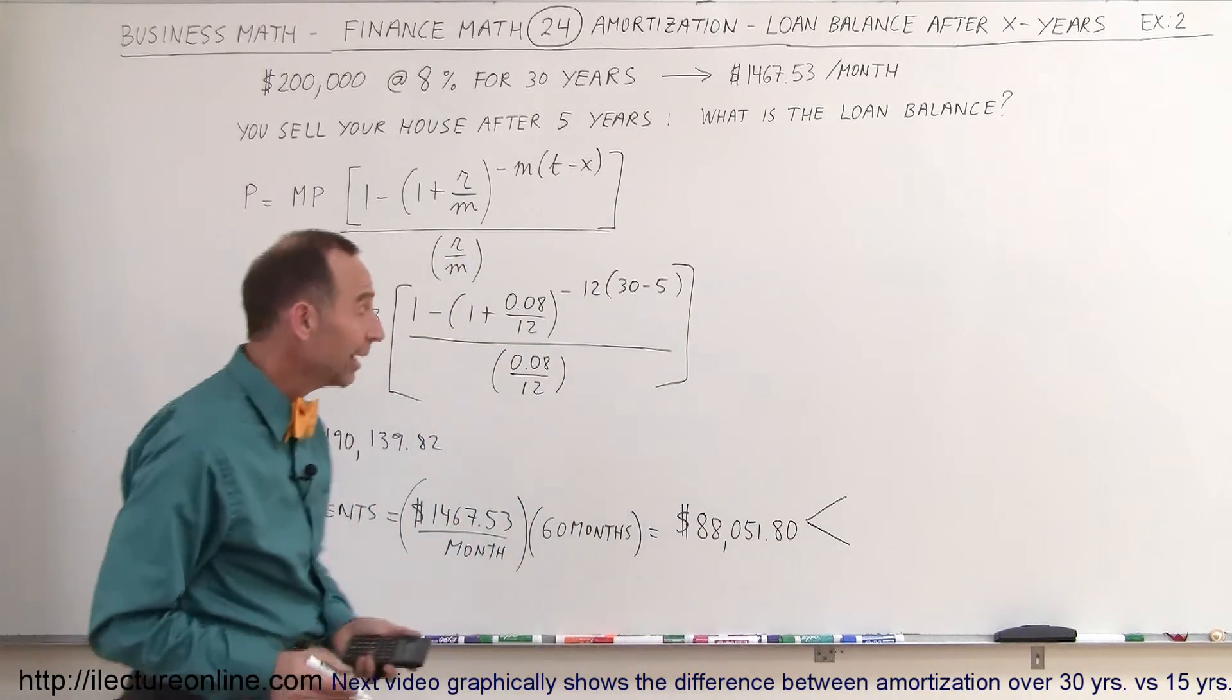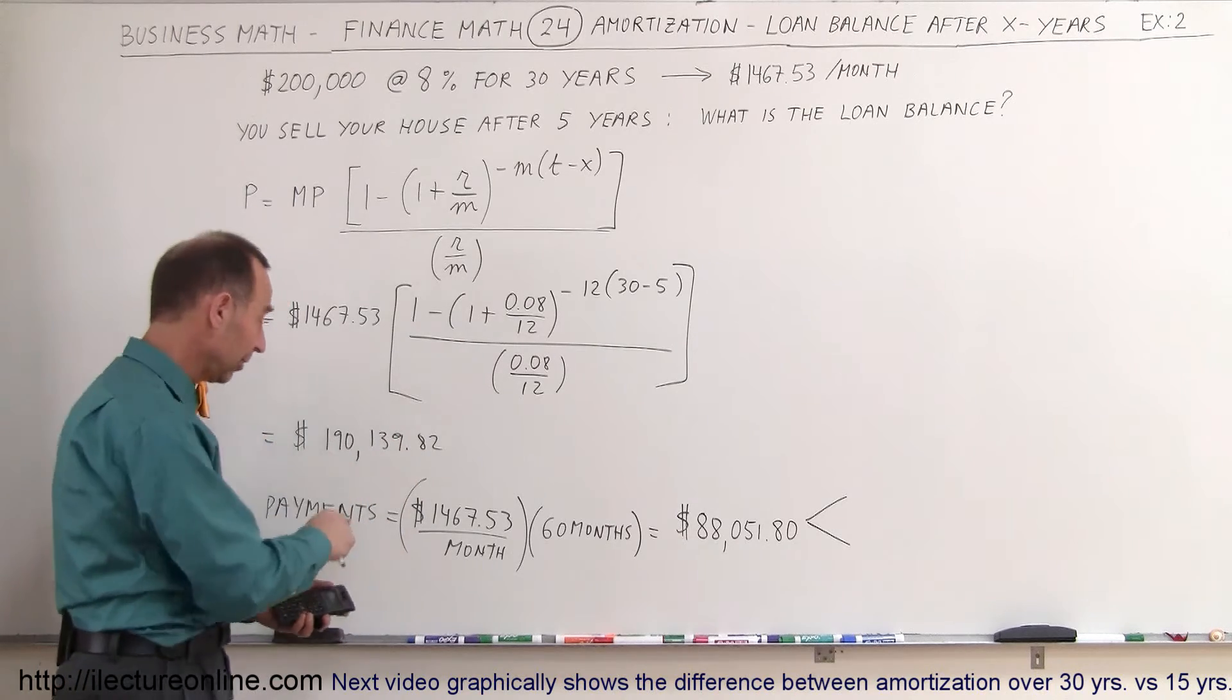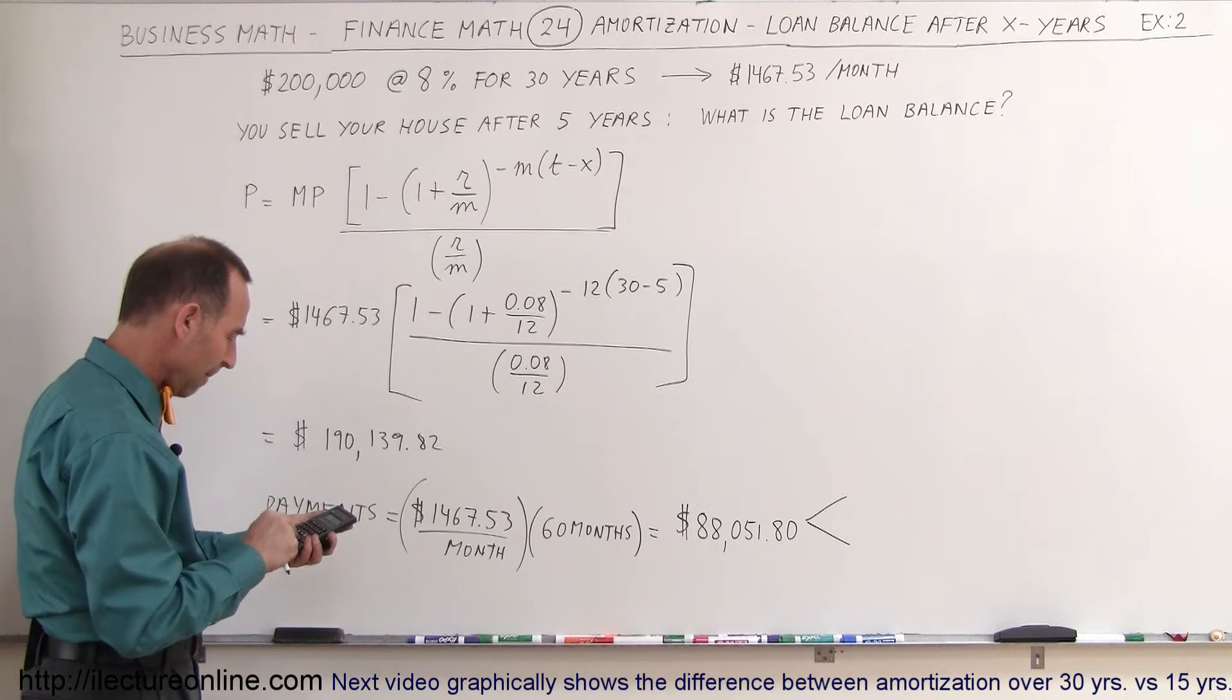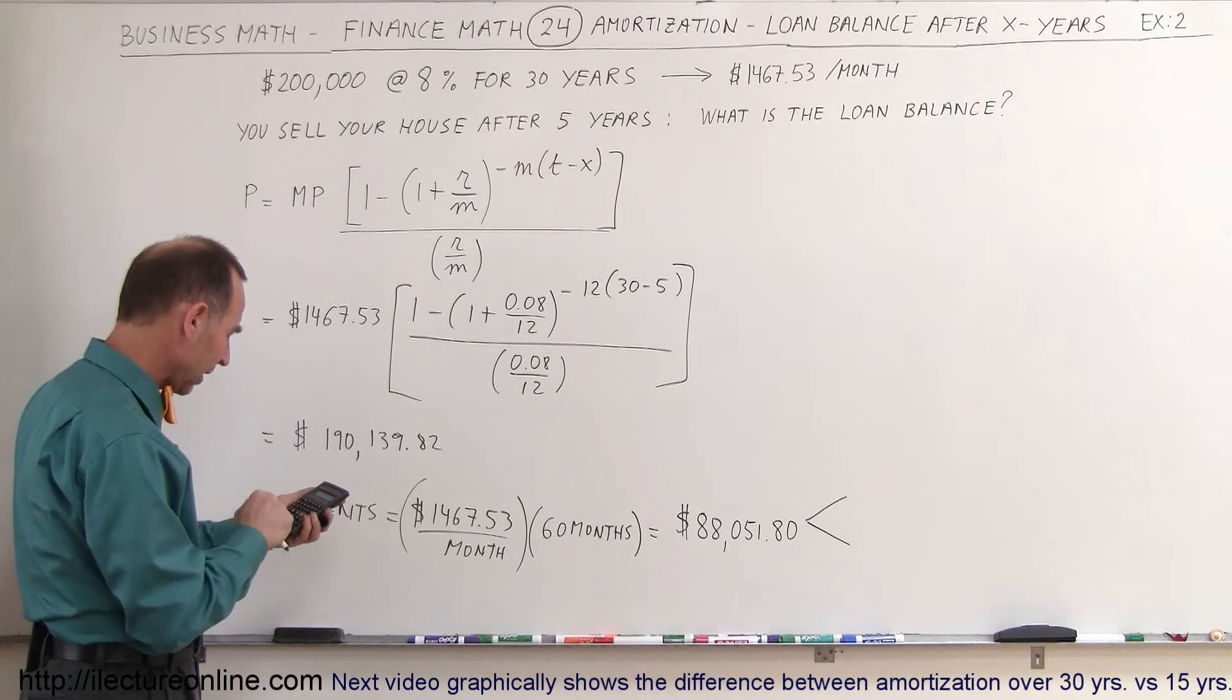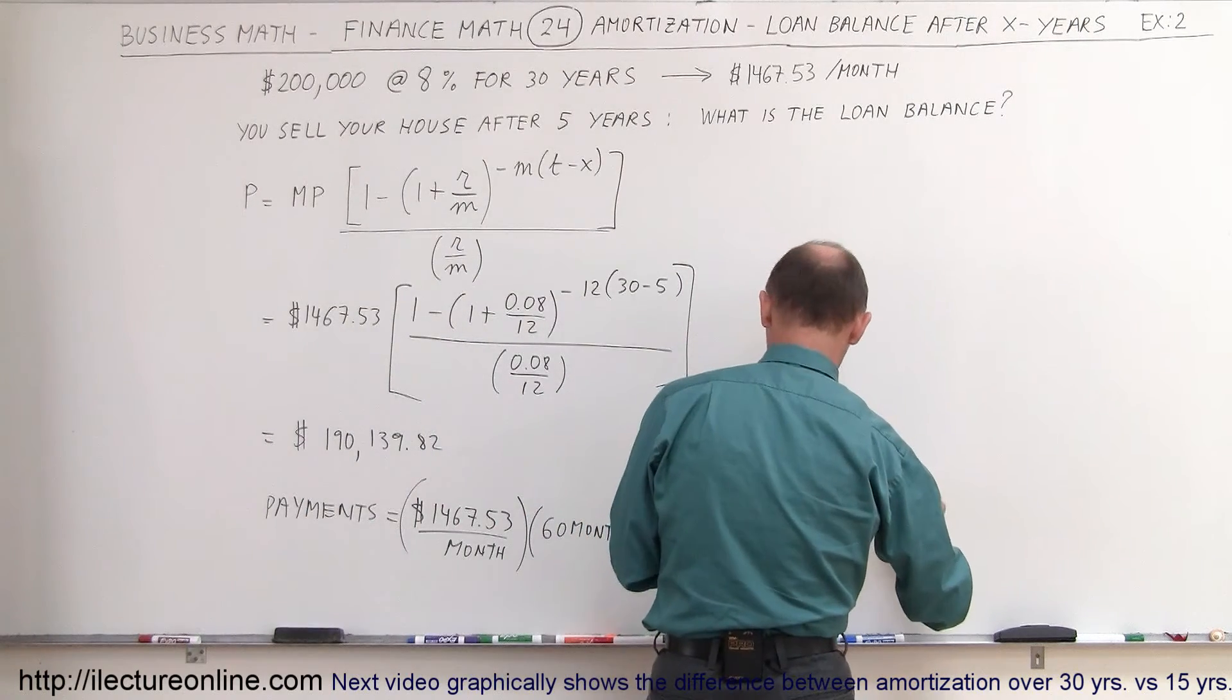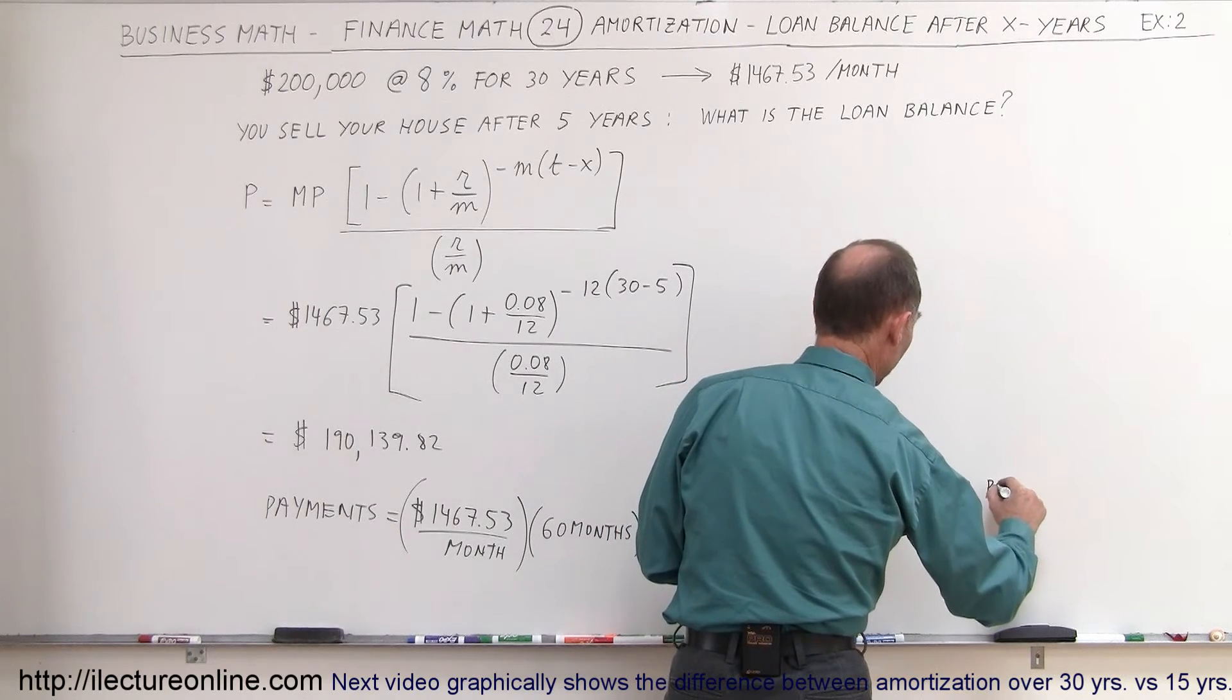Wow, that's a lot of money. And from that, less than $10,000 of it went to principal. So let's take the difference between $200,000 and this number. So $200,000 minus $190,139.82. So that means that only $9,860.18 went to principal.